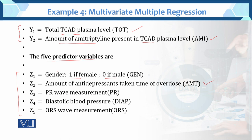Z3 is the PR wave measurements, with notation PR. Z4 is diastolic blood pressure, notation DIAP. And Z5 is QRS wave measurements, notation QRS. So these are the five predictor variables and these two are the response variables.